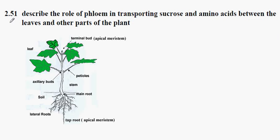This is GCSE Biology syllabus statement 251 and we're going to be describing the role of the phloem in the transport of sucrose and amino acids between the leaf and other parts of the plant.